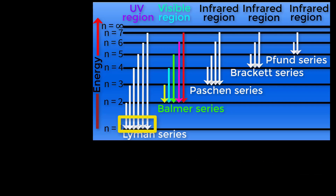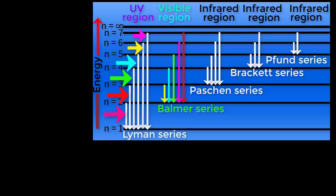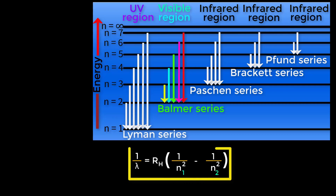All the electrons drop to this lower energy level from higher energy levels. This series of spectral lines is called the Lyman series, and these spectral lines fall into the ultraviolet region. Within the Lyman series, this energy level is the first line, the next is the second, then the third, fourth, and so on up to infinity.